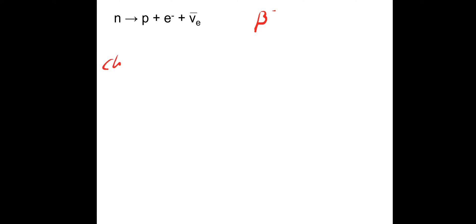Here we have the neutron turning into a proton and emitting an electron and an antineutrino — that's beta minus decay. I want to look at the conservation laws to show that this interaction can happen. Starting with charge: the charge of the neutron is 0, charge of a proton is plus 1, charge of an electron is minus 1, and the antineutrino has a charge of 0. That satisfies conservation of charge: 0 on the left-hand side, 1 minus 1 equals 0 on the right-hand side.